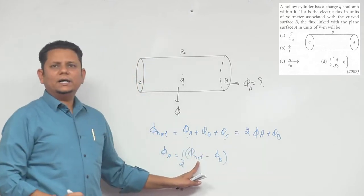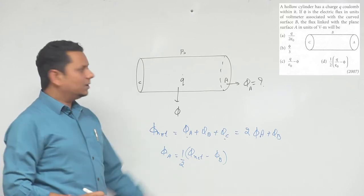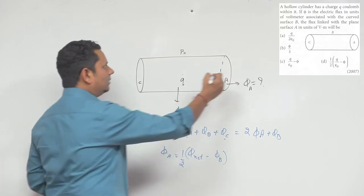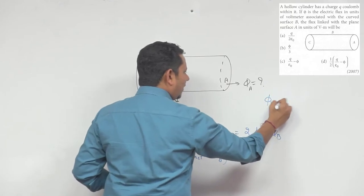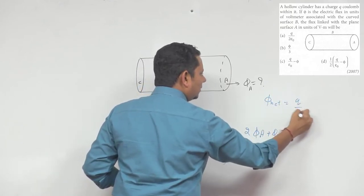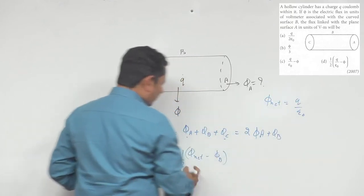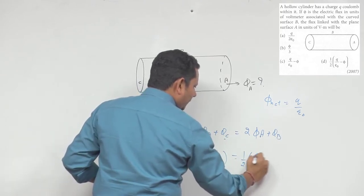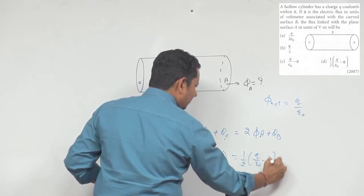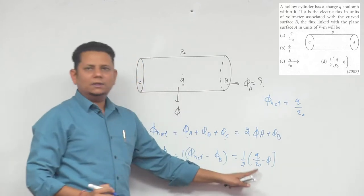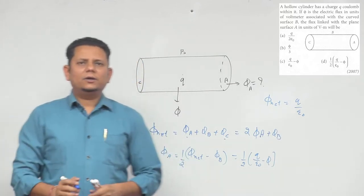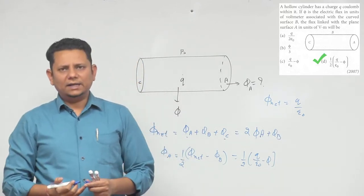Now phi_net, the total flux coming out from here, will be equal to total charge enclosed divided by epsilon naught. So if we put phi_net here, this becomes half q by epsilon naught minus phi. Phi is already given. Based on this, we can say that option number d is the right answer for this question.